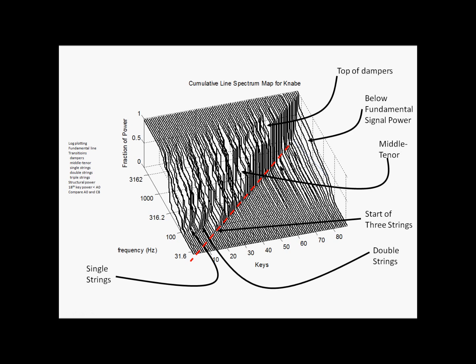There are some transitions here that are of note. First, for example, here is where the three-string keys start. Here's where the double strings start, and here are the triple strings, there are about eight of them on this piano. Up here is the transition, here's where the dampers no longer are in effect up in the tenor, or the treble.